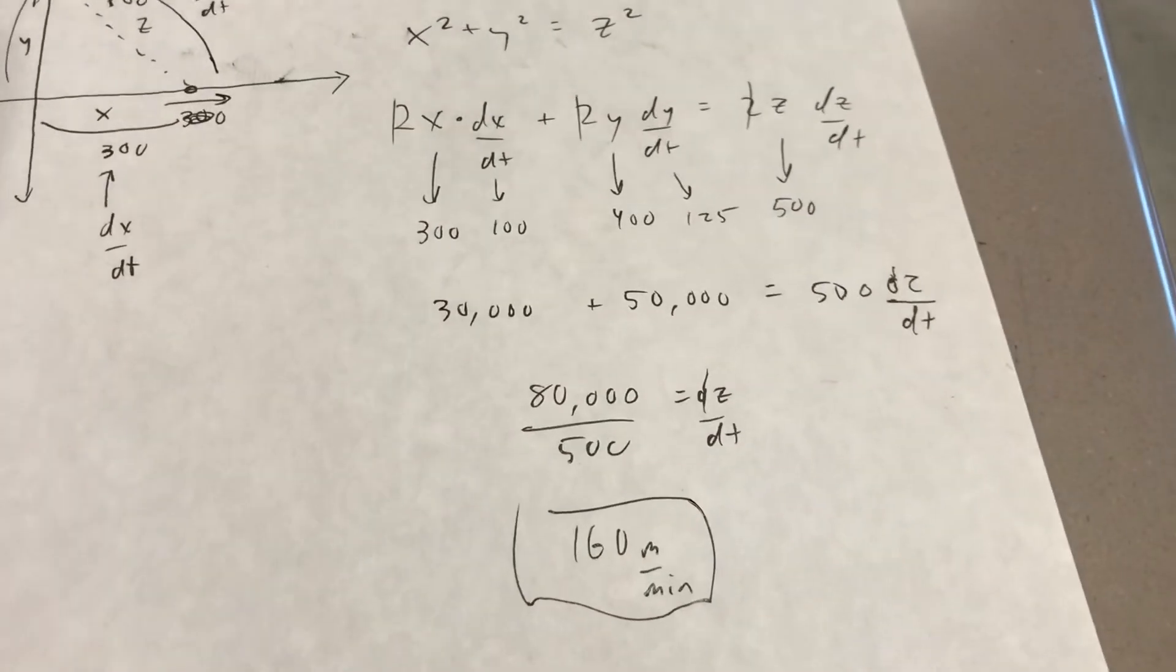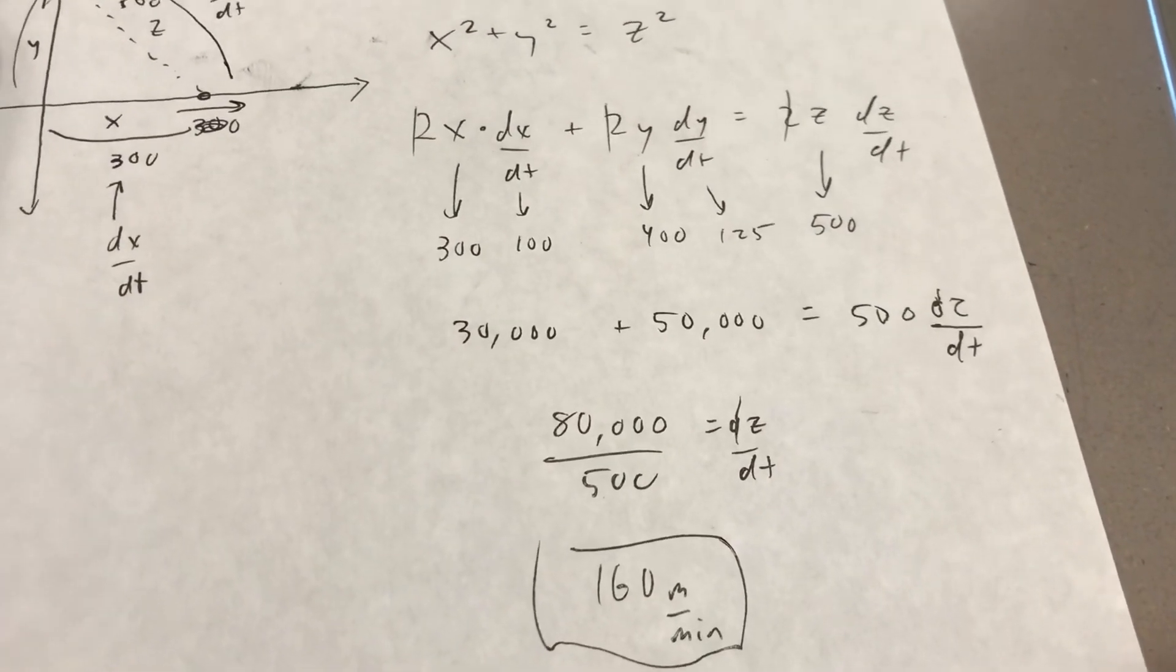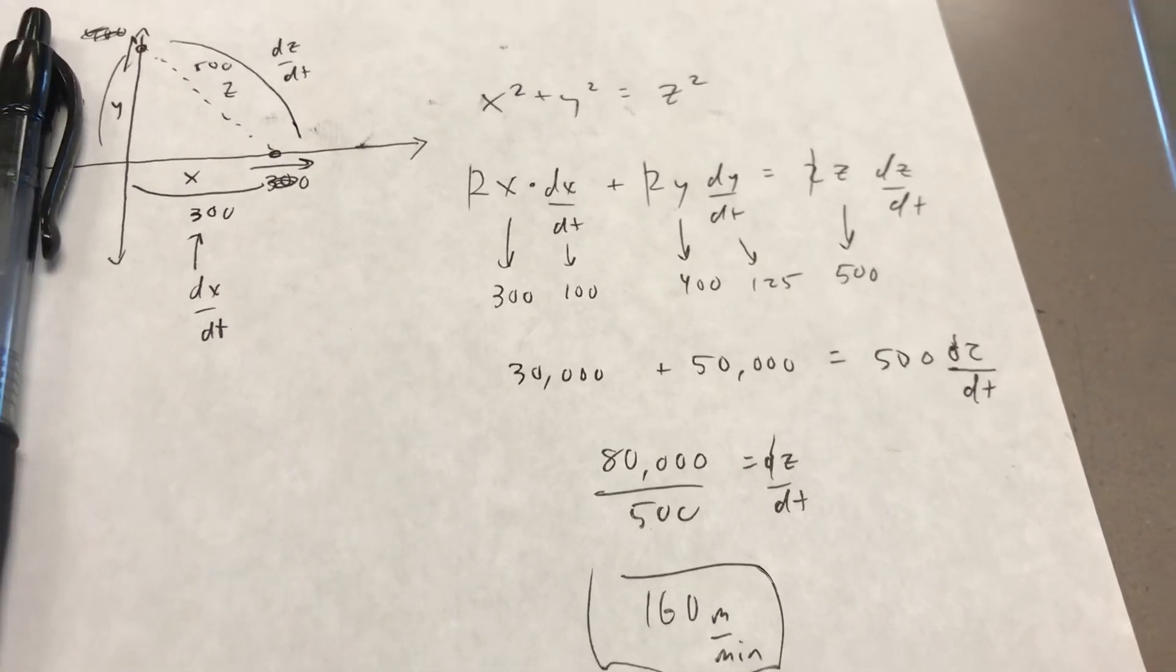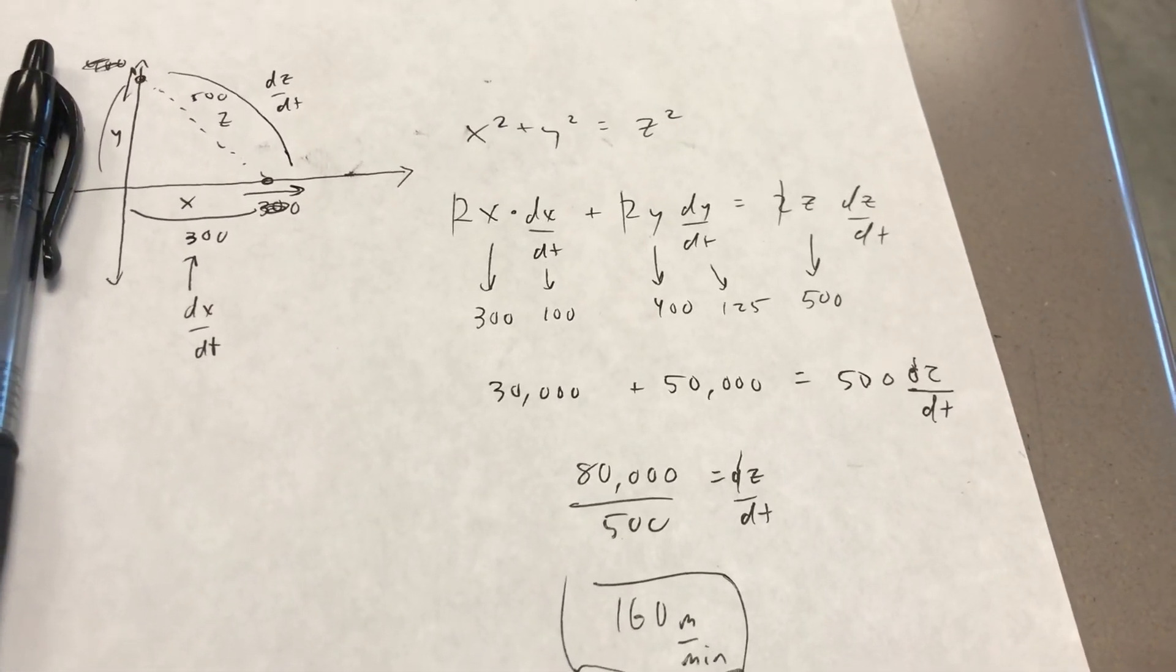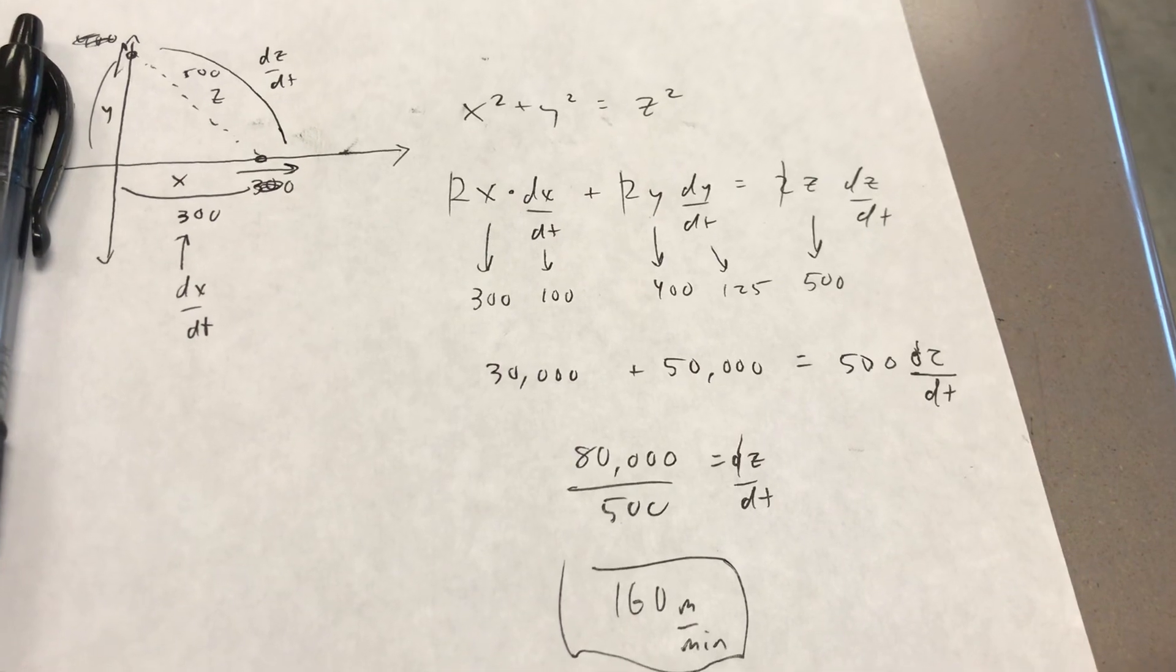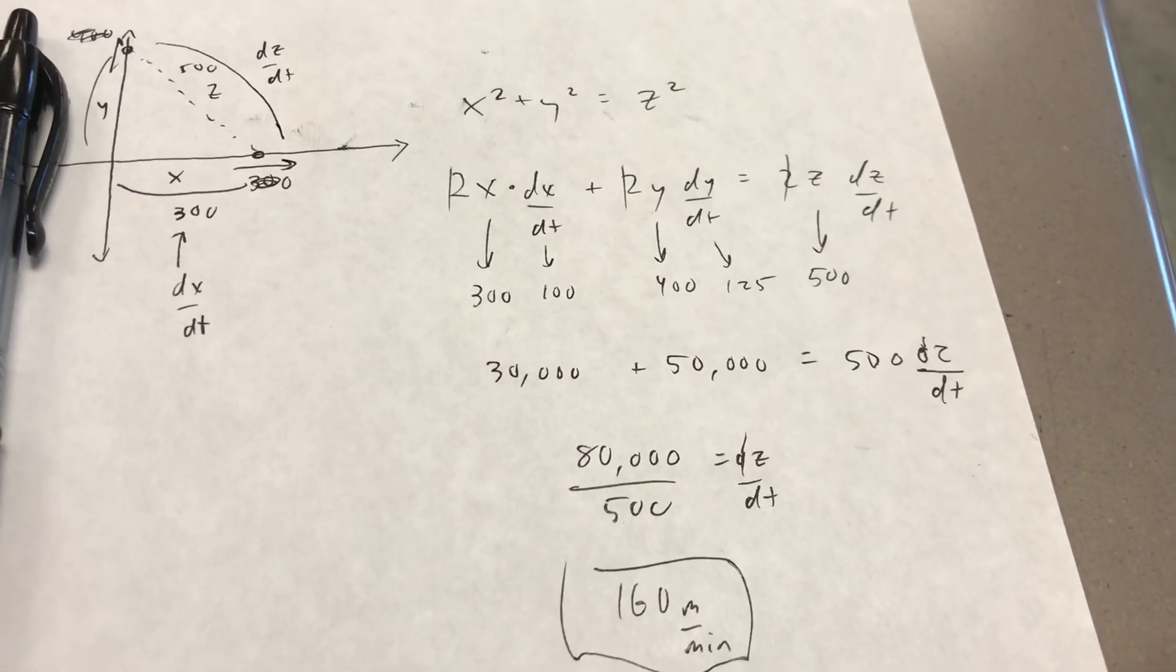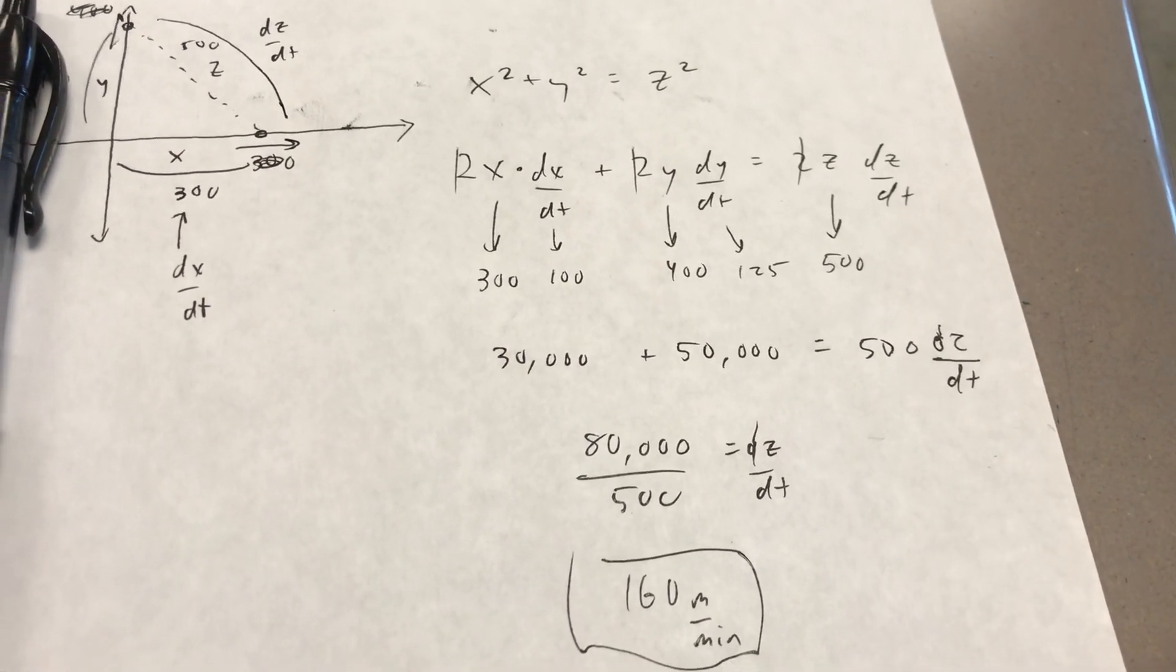So a little bit of a challenging problem, but in the grand scheme of things not a terrible related rates problem. If you notice you have some kind of geometric relationship like that happening, be on the lookout for that. I think they're going to work this in on the AP exam somewhere.